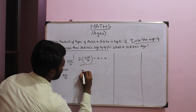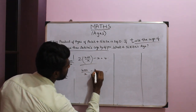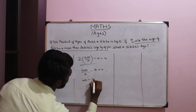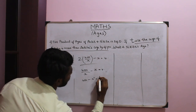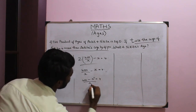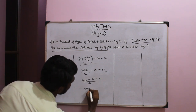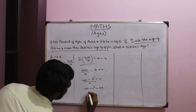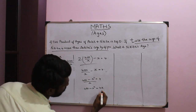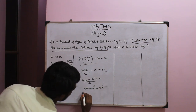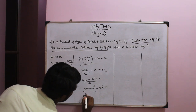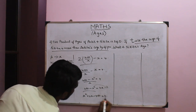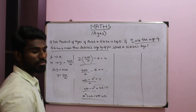Setting up the equation: twice Nikita's age minus Ankit's age equals 4. Substituting Nikita's age as 240/x gives: 2 times (240/x) minus x equals 4. Multiplying through by x and rearranging: x squared plus 4x minus 480 equals 0. This is the general quadratic equation. Now let's factorize it.